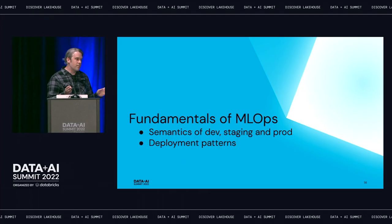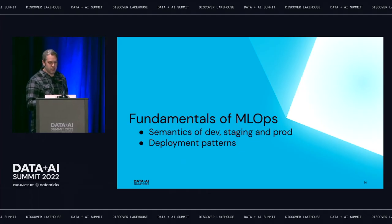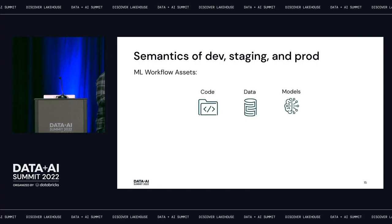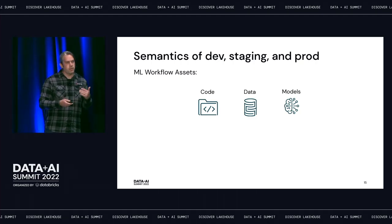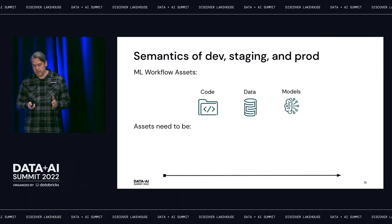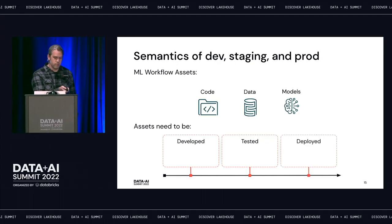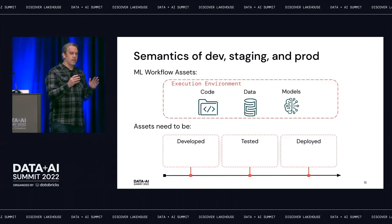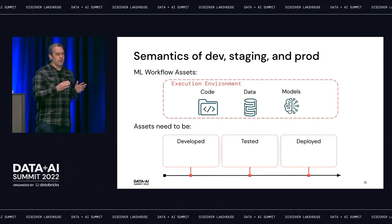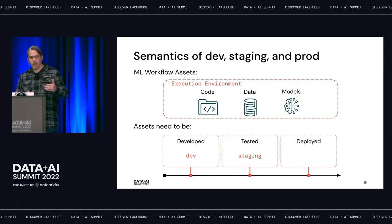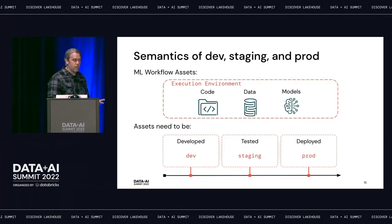Let's talk about the meaning of dev, staging, and prod in the context of MLOps, as well as two different model deployment patterns. In ML workflows there are three different assets: code, data, and models. Each needs to be developed, tested, and deployed to production, and each needs to be operated in a distinct execution environment. So you need a dev environment, a staging environment, and a production environment. Some organizations may have only two or more than three — the idea is the same.